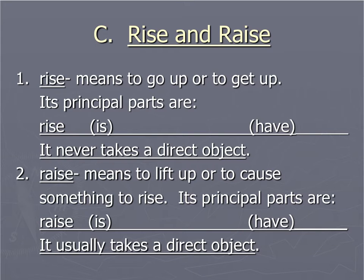So when we use rise, we mean to go up or to get up. And its principal parts: the base form is rise, present participle form is rising, the past of rise is rose, and then the past participle form is have risen. Rise will never take a direct object. And then we have raise, which means to lift up or to cause something to rise. And because we're lifting up or causing something to rise, it's going to take a direct object.